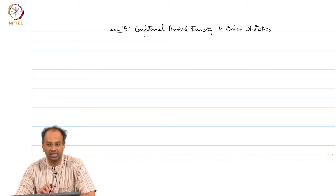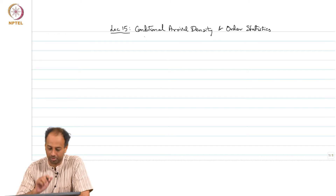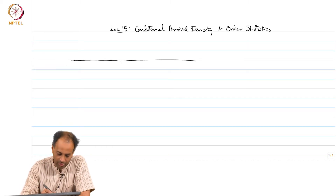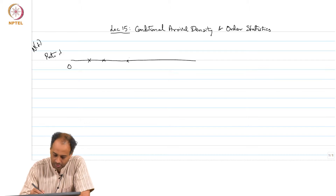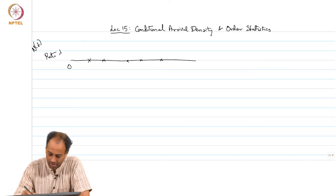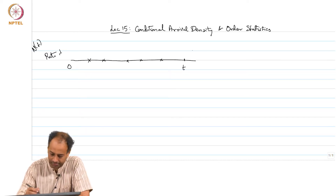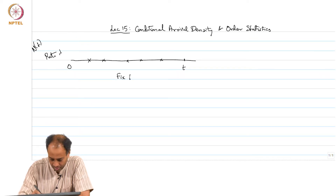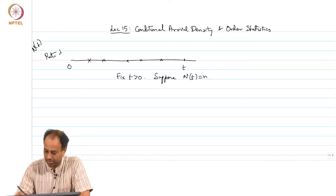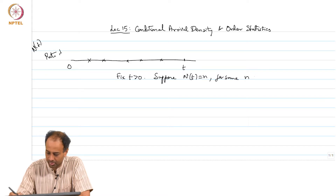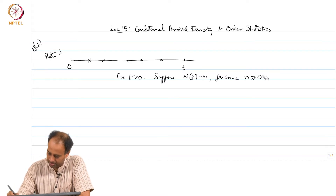Good morning. Today we will discuss the conditional arrival density in a Poisson process. Let us say you have a Poisson process of rate lambda. You fix a time. Suppose N(t) = n, with n greater than or equal to 1.